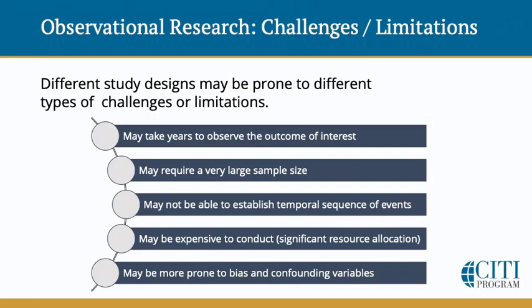Different observational study designs may be prone to different types of challenges or limitations. These can impact how you approach your IRB review, and that is why it's important to understand which study design is being used within a given protocol. For example, depending on the outcome of interest, a prospective cohort study can take years to conduct and may require a large sample size, as some subjects will lose interest in the research and drop out. Some participants may be lost to follow-up for reasons related to their health status or their life circumstance. For this reason, IRB professionals should question a seemingly small number of study participants in a longitudinal study. Other observational study challenges involve the inability to establish a temporal sequence of events. This problem is specific to cross-sectional studies because all data are collected at a single point in time, and it can be difficult to determine when a given variable precedes another in time.